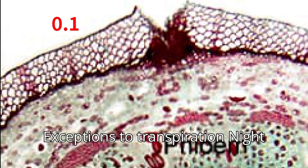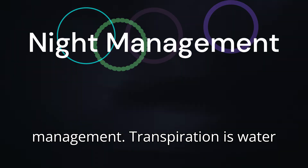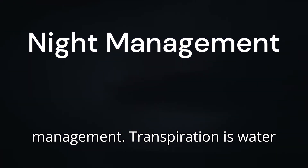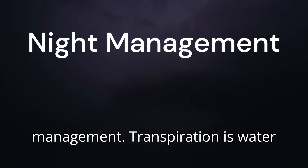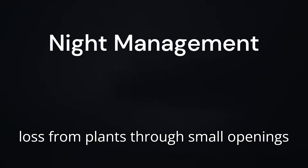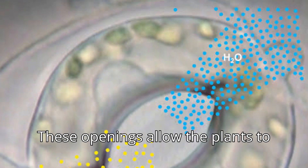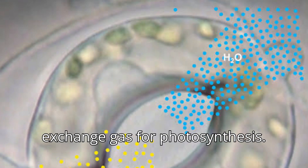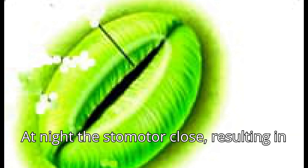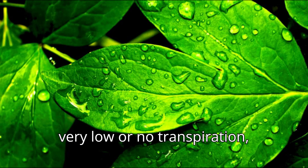There are some exceptions to transpiration. Night management: transpiration involves water loss from plants through small openings on their leaf surfaces. During the day, these openings allow the plants to exchange gas for photosynthesis. At night, the stomata close, resulting in very low or no transpiration.